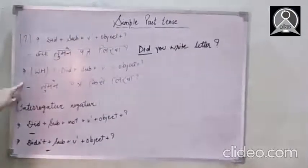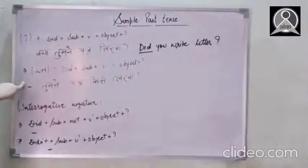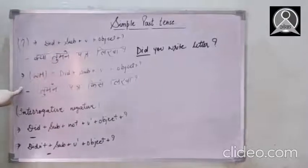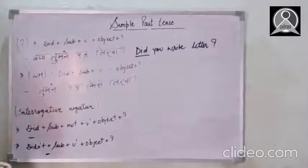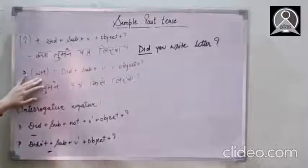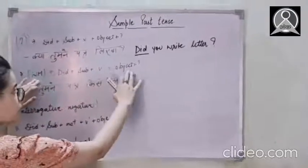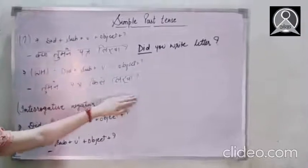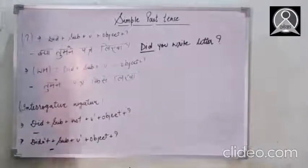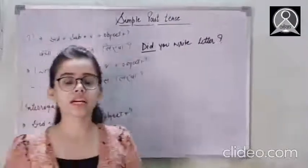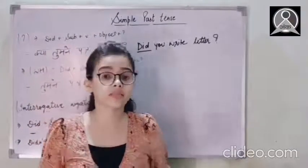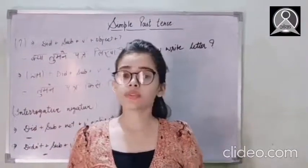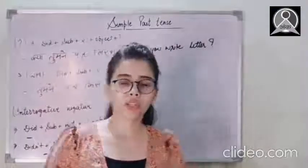Now let's then move to the explanation part where we have to explain the reason or the thing whichever people or the person asks me. So WH family plus did plus subject plus verb's first form plus object plus question mark as well. Tumne patr kise likha? Now here, the person who's asking me the question needs an explanation. That's why we're going to use this WH family. So let's have a look here.